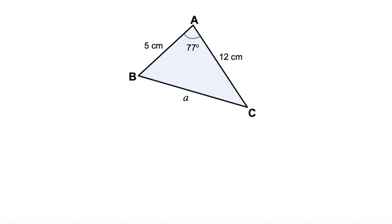The first question asks us to find the length of A. To do this, we're going to be using the cosine rule. To apply the cosine rule, we need to have two sides — in this case, 5 centimetres and 12 centimetres — and we also need to have an angle, which in this case is 77 degrees.